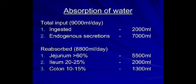Water absorption is crucial. Of approximately 9 liters of water entering the gut, 2 liters are ingested and 7 liters are endogenous secretions. About 8800 ml is reabsorbed — 60% in the jejunum, 20% each in the duodenum and ileum, and 10–15% in the colon. In total, 8.8 liters out of 9 liters is absorbed, with maximum absorption in the jejunum, and about 2000 ml absorbed in the ileum and colon.